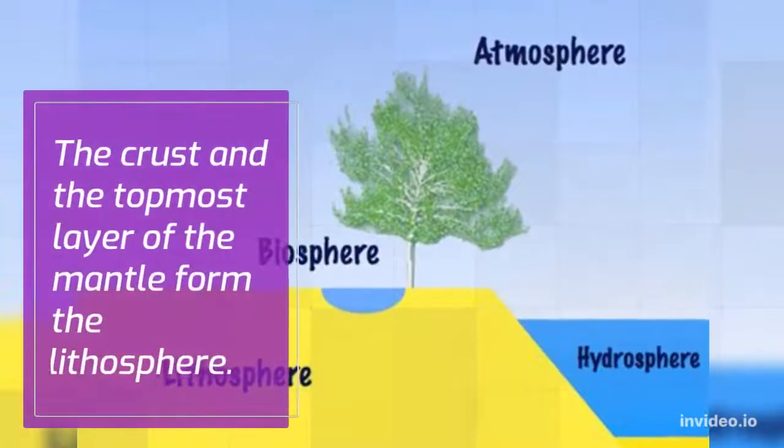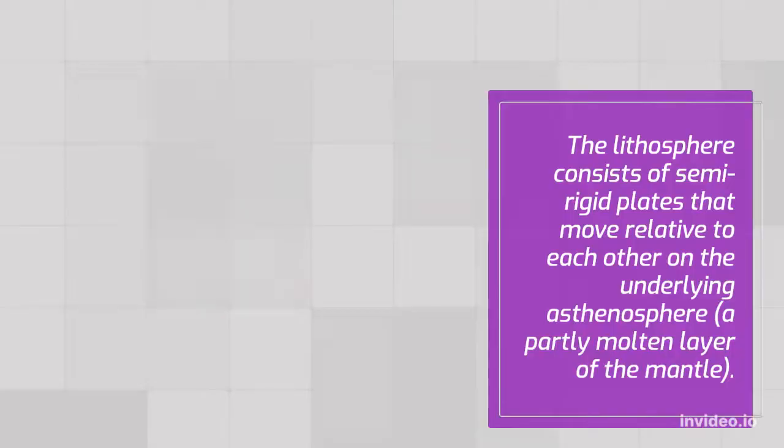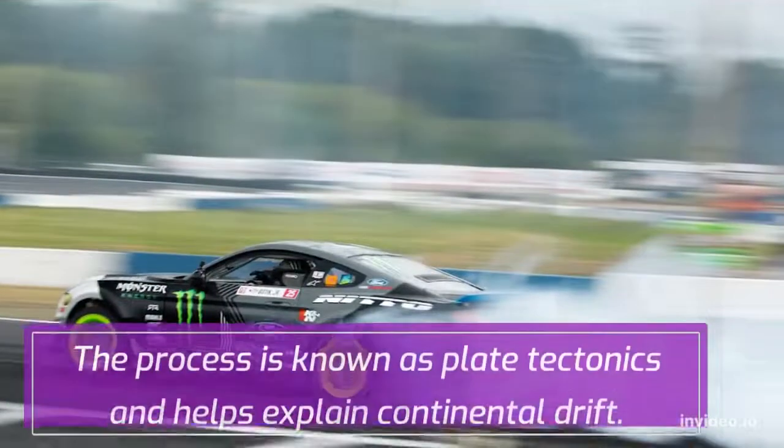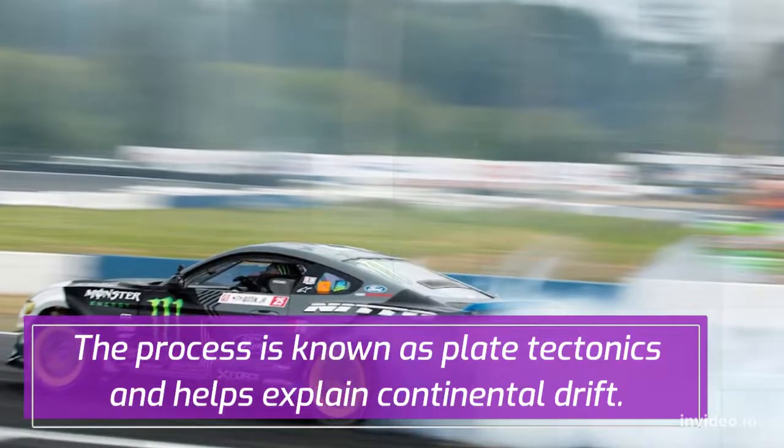The crust and the topmost layer of the mantle form the lithosphere. The lithosphere consists of semi-rigid plates that move relative to each other on the underlying asthenosphere, a partly molten layer of the mantle. The process is known as plate tectonics and helps explain continental drift.